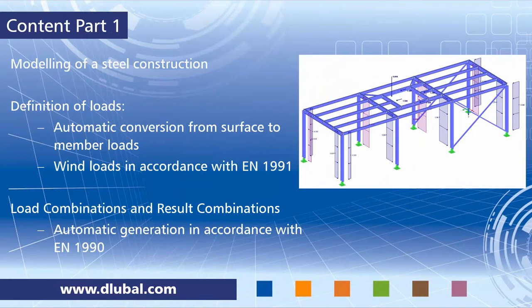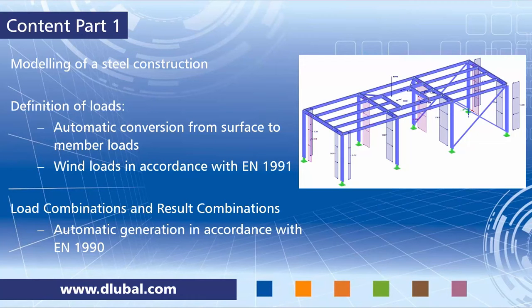As mentioned, we will model a steel construction today. On the right hand side you see the picture — this is our goal, the simple construction we are going to design. We will define self-weight, imposed loads and wind loads and therefore we will use load generators. We will define area loads that are automatically converted into member loads and use a generator to create wind loads in accordance with Eurocode 1.